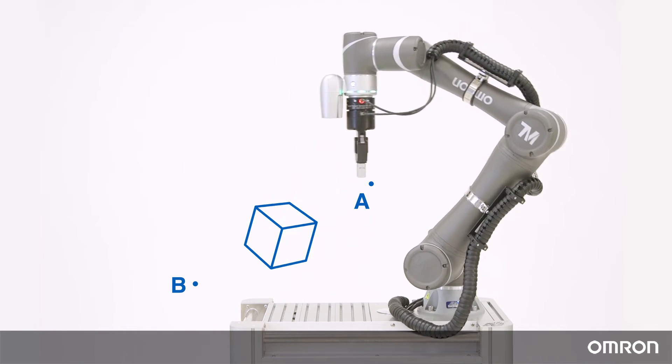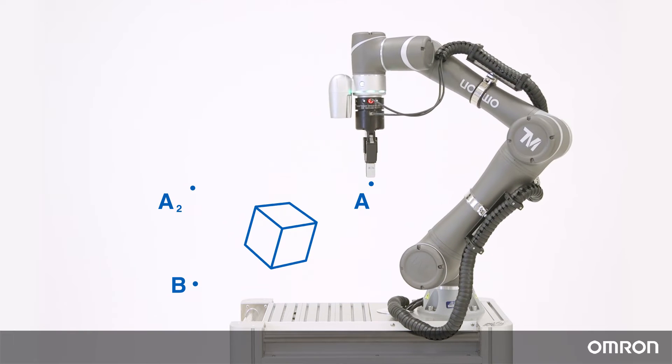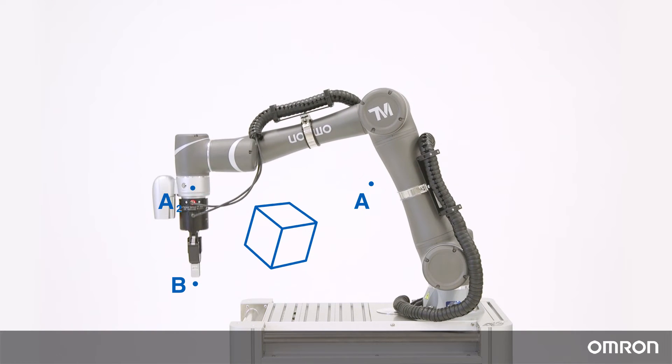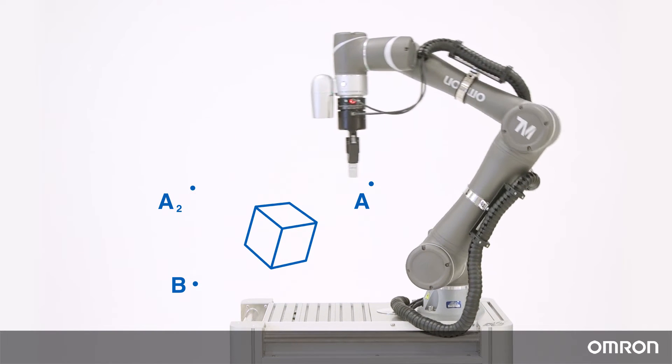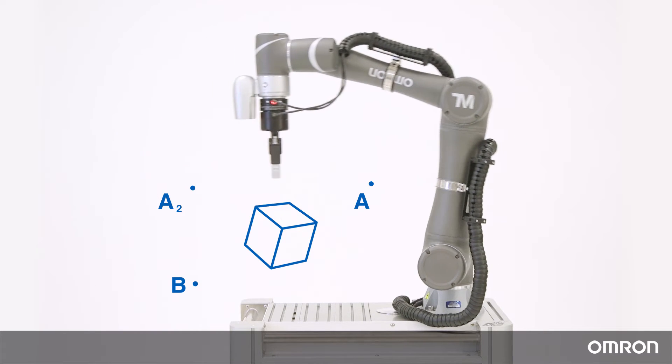In this situation, we would need to add an intermediate point, point A2, to avoid the obstacle. Without blending, the cobot would move from point A to exactly where point A2 is, come to a complete stop, and then move on to point B.